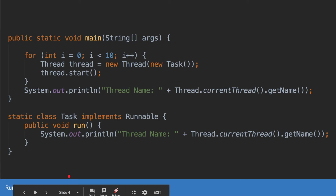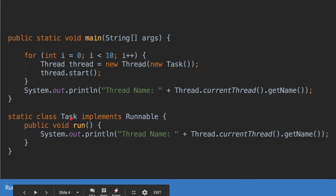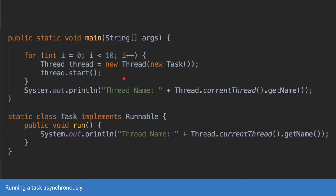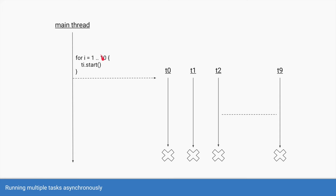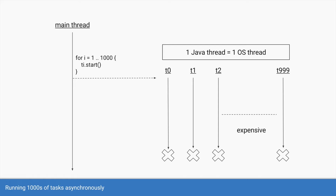To extend this — if you want to run 10 tasks similarly — you can use the same Task class which implements Runnable, but now create the threads in a for loop. The loop runs from i=0 to 10, each time creating a new thread with a new instance of Task and starting it. Java will create threads called thread-0 through thread-9 (t0 to t9), and once the operations within the run method are complete, Java will kill those threads.